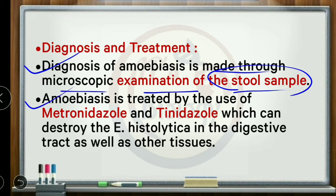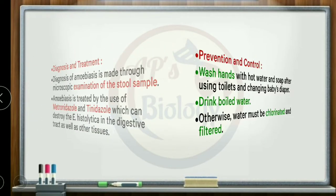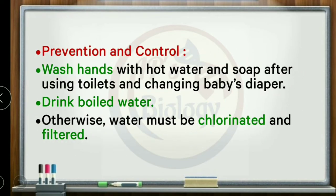Amoebiasis is treated with metronidazole and tinidazole. These chemicals destroy Entamoeba histolytica in the digestive tract as well as in other tissues.